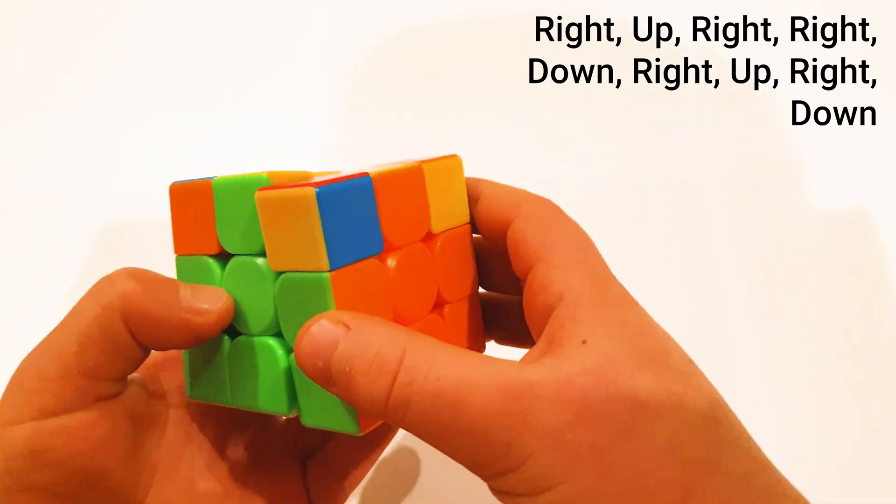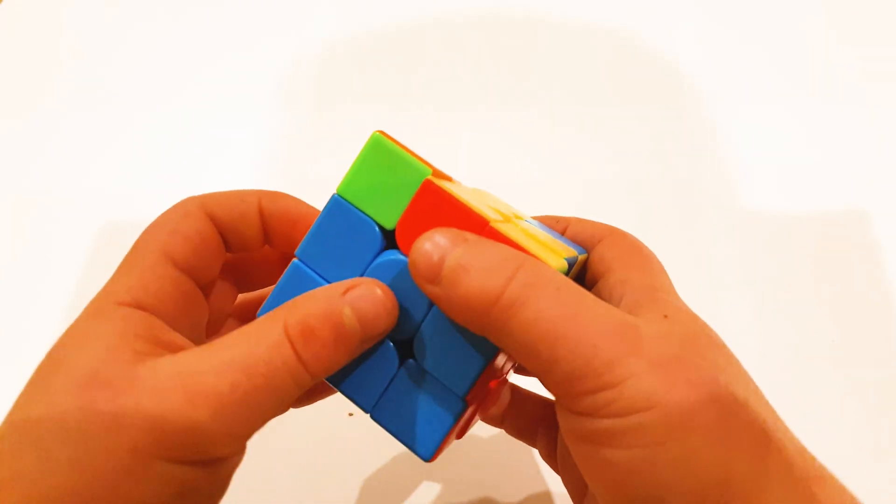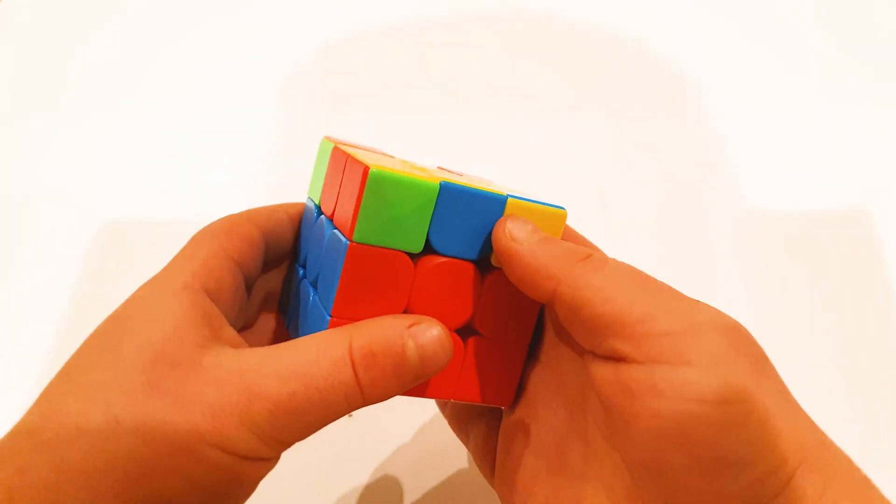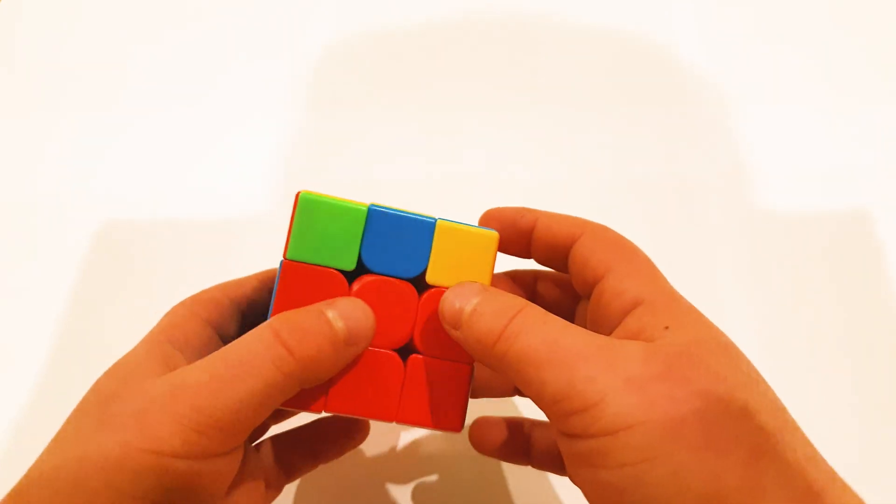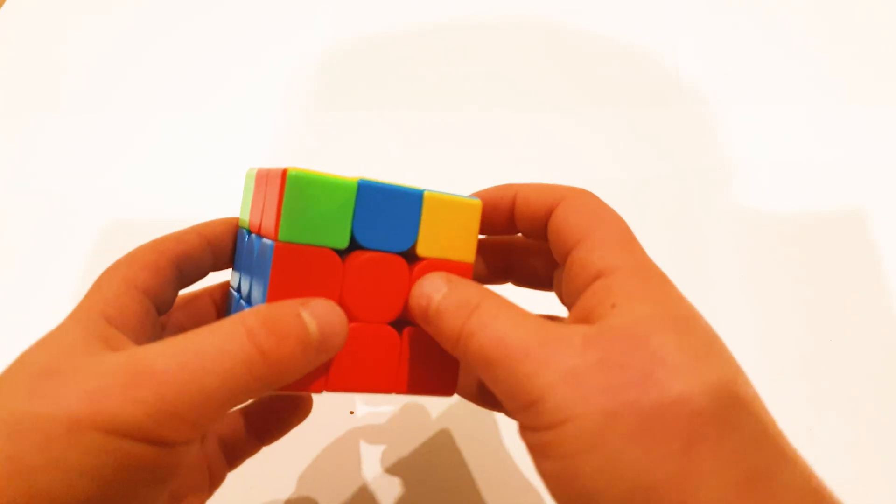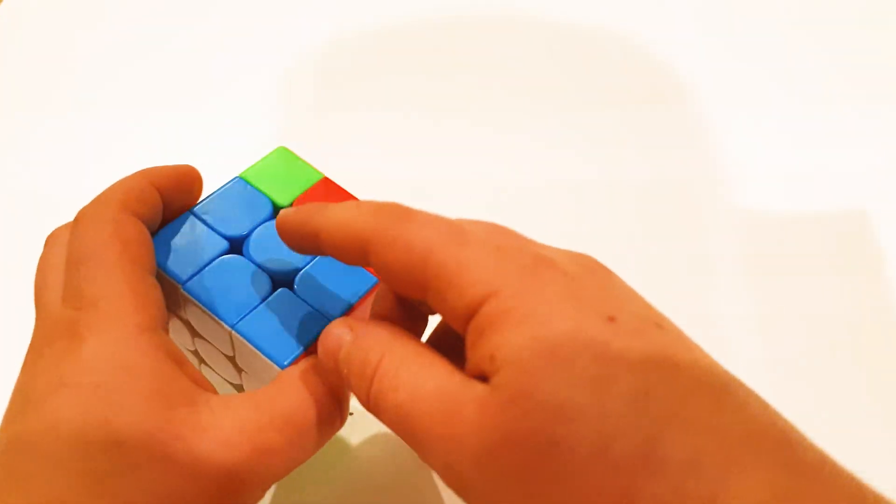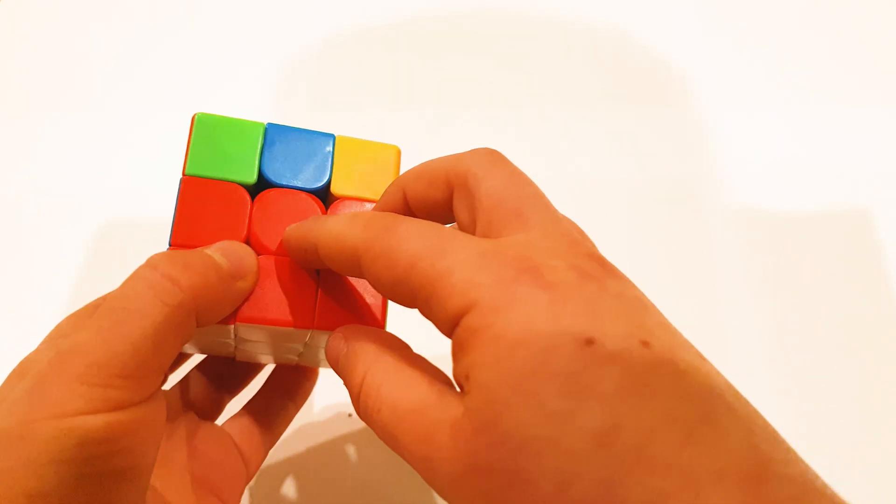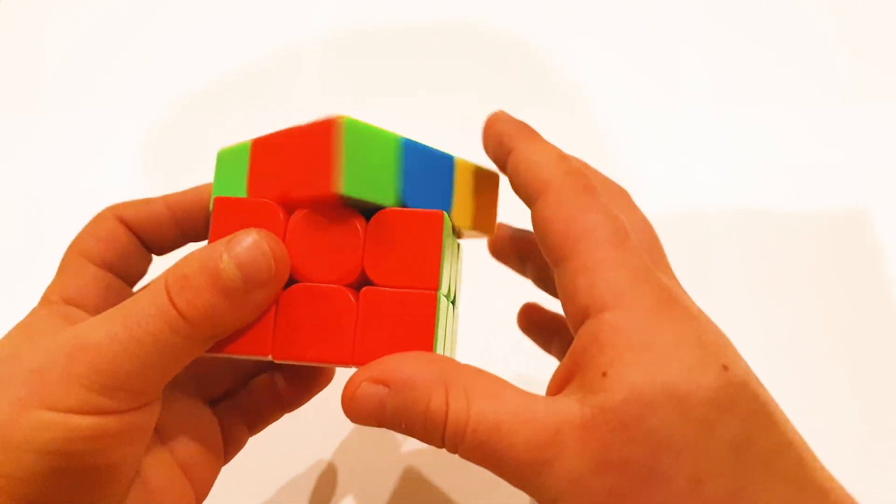So you move it. Now you have two next to each other, but these aren't matching. If you have something like that, it can be with any colors, but if you have two that need to switch places because blue is here and red is here, then you start from the one on the right and you do the same algorithm.